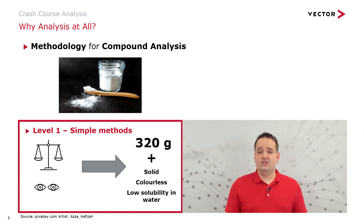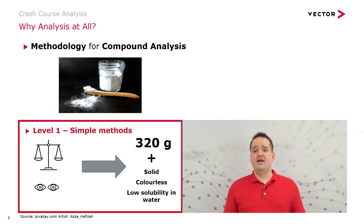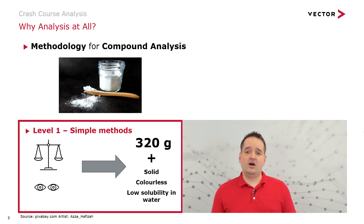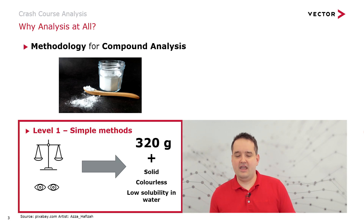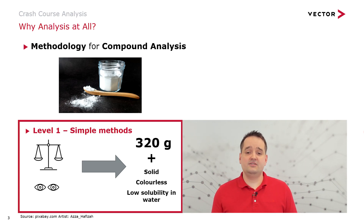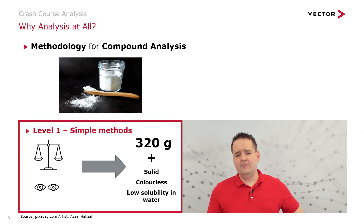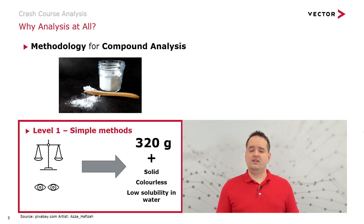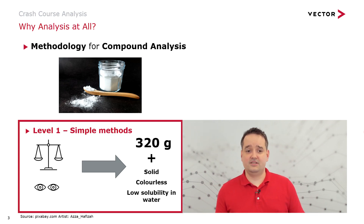At level one, we can use simple methods. For example, we could put it on a scale or watch it with our eyes. We would get information like it's 320 grams, it's solid, it's colorless. But this does not really have an impact on our decision whether we take the substance or not.